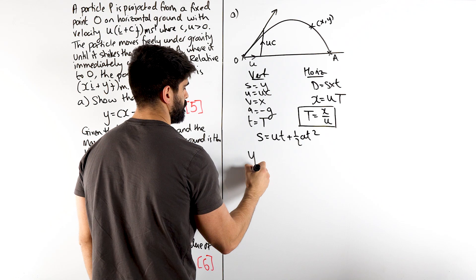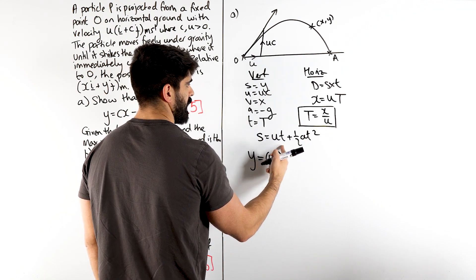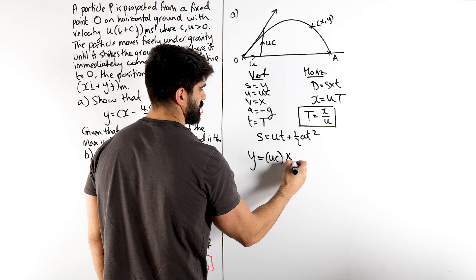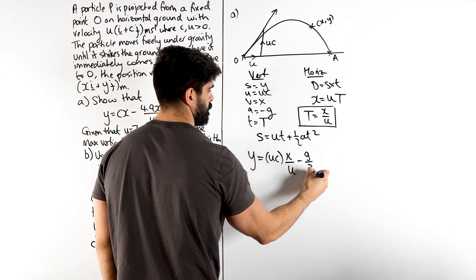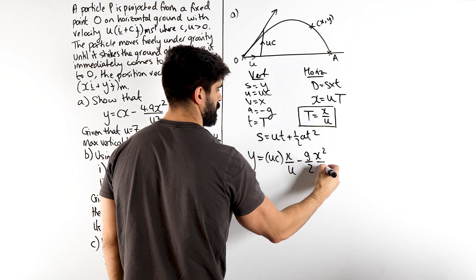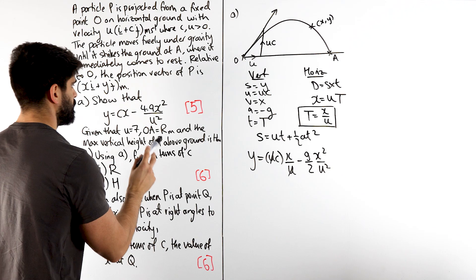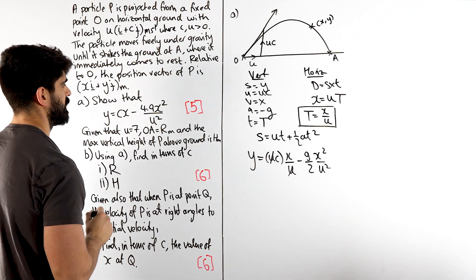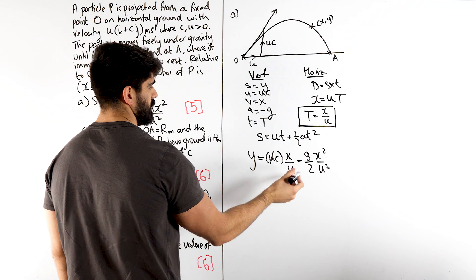So, S which is Y, is the initial speed, which is UC, T. I'm just going to replace it now. X over U. Half of A, half of this is minus G over 2. T squared. When you square this, you get X squared over U squared. Here, the U's cancel. And G, they've used as 9.8. They've halved it to give you 4.9. And you can see that gives you the answer, X squared, U squared. There we go.